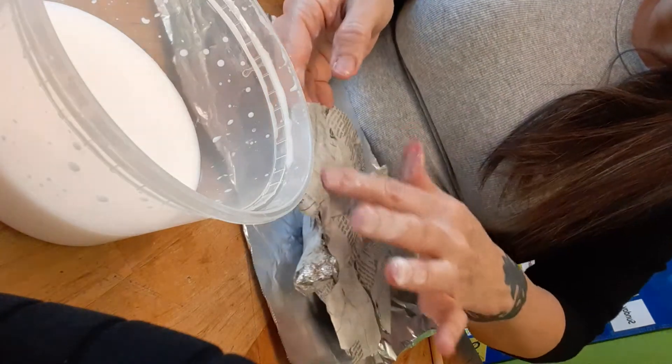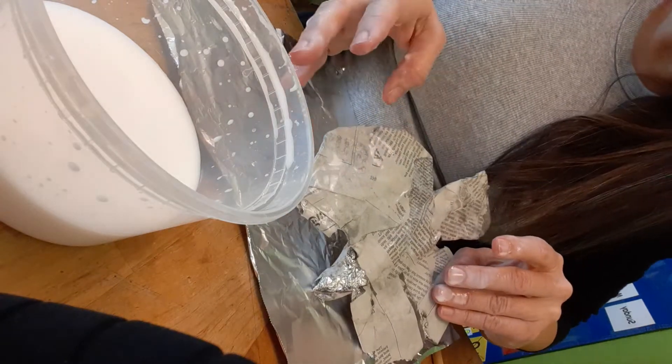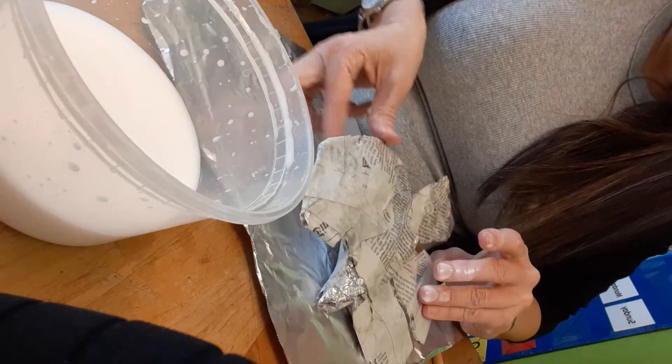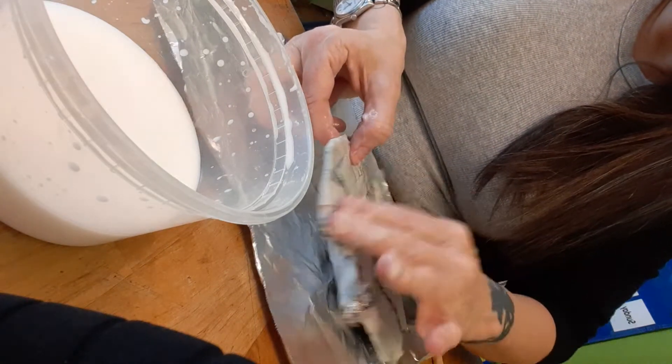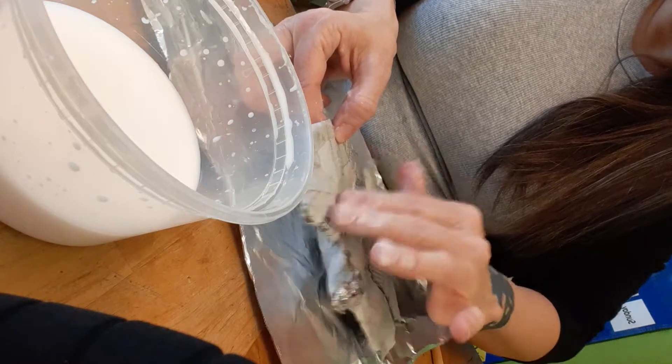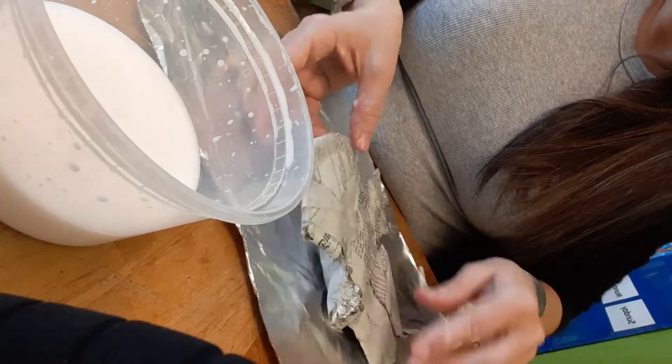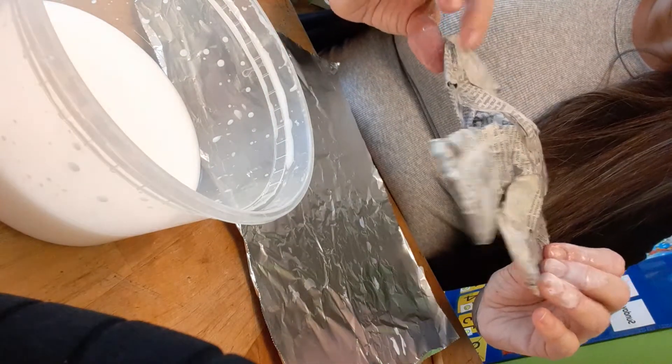If you get a lot of glue on your bird, like puddles of it—which I did—then you can just layer a piece on top without even dipping it and just start smoothing it down until it's smooth.